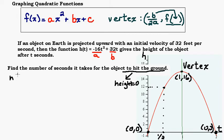What you would want to do is take the function h(t) = -16t² + 32t. We want to know how many seconds it takes. So we need to find t for the height to be 0. So we're going to plug 0 in for h(t).